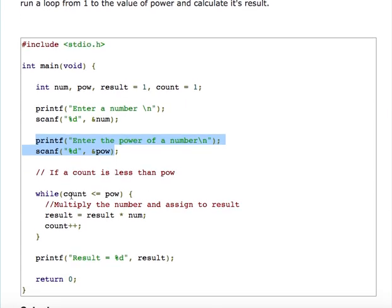Then I am taking number as an input from a user, then power of a number. I am running a loop from, I mean I have taken one variable count whose initial value is 1. If count is less than power, then in result what I am doing is I am multiplying result with num variable and incrementing the value of count.